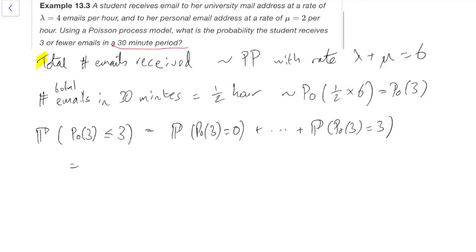So that's, the rate lambda is three here, so that's e to the minus three, three to the 0 over 0 factorial, plus e to the minus three, three to the 1 over 1 factorial, plus e to the minus three, three to the 2 over 2 factorial, plus e to the minus 3, three to the 3 over 3 factorial.